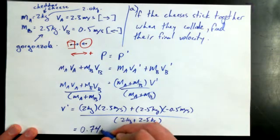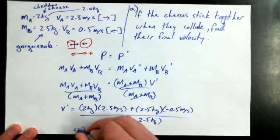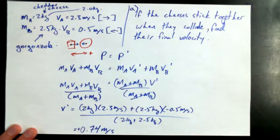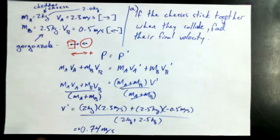That sounds about right with the negative signs included. 0.74 meters per second, and it's a positive 0.74, so 0.74 meters per second. Good. Thank goodness. I think... Yeah, I think the 1.3 would be without the negative sign. Yeah. Okay, so 0.74 meters per second. That is the final velocity of this cheese system.